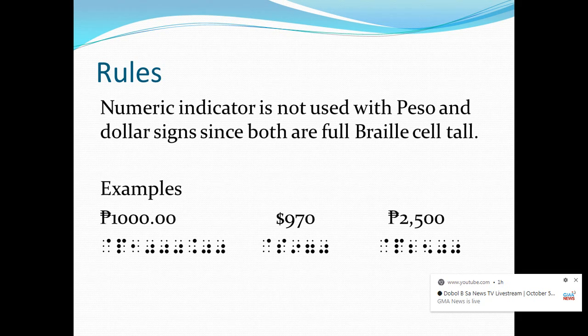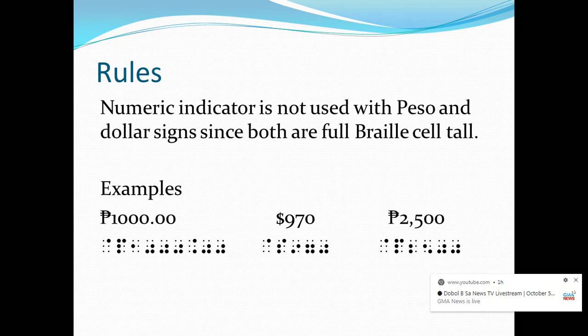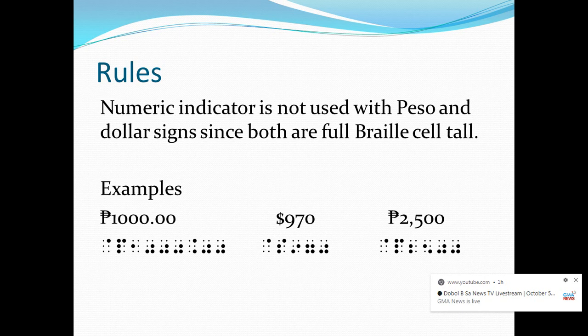That full Braille cell toll is a character of these two monetary signs, since for both dollar and peso signs, both have dots on the upper, middle, and lower parts of the Braille cell. For example, we have ₱1,000.00. In Nemeth Braille code, we write the peso sign — dot 4 and letter P — then the digits 1, 0, 0, 0 for 1,000, then the decimal point — dots 4 and 6 — and two zeros right after. We don't need to write the numeric indicator since the peso sign is a full Braille cell toll sign.